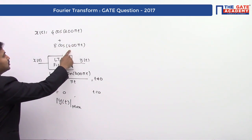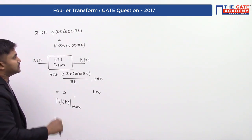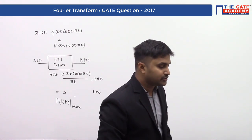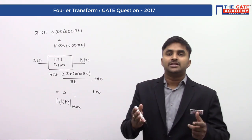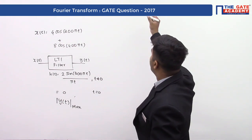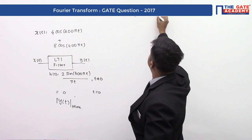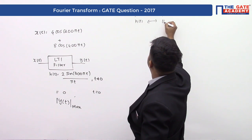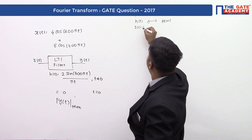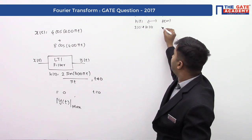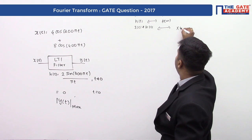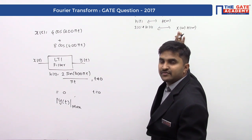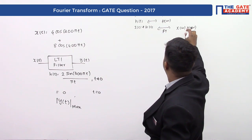The input has two sinusoids, two cosine functions. We should know how to represent this using the Fourier transform, because using the Fourier transform we can convert convolution into multiplication. If x(t) has Fourier transform X(ω) and h(t) has Fourier transform H(ω), then x(t) convolved with h(t) gives Y(ω) = X(ω) · H(ω).